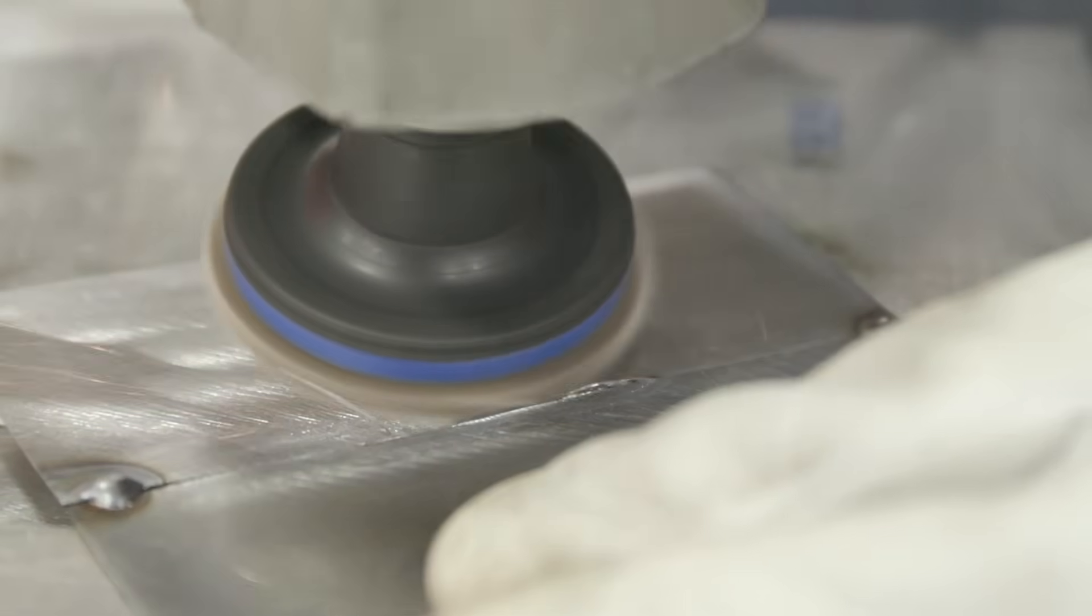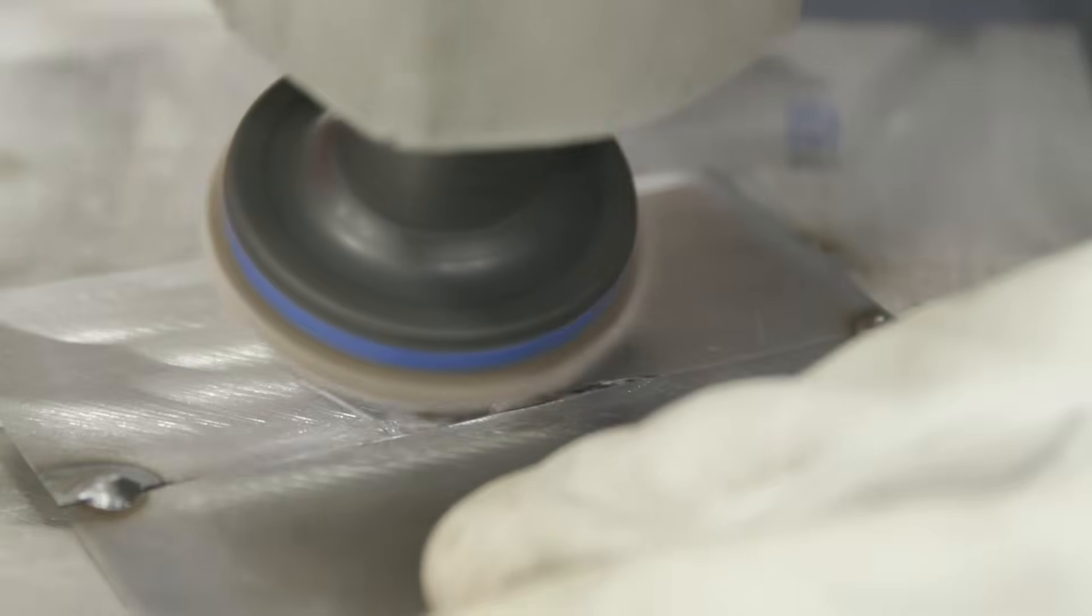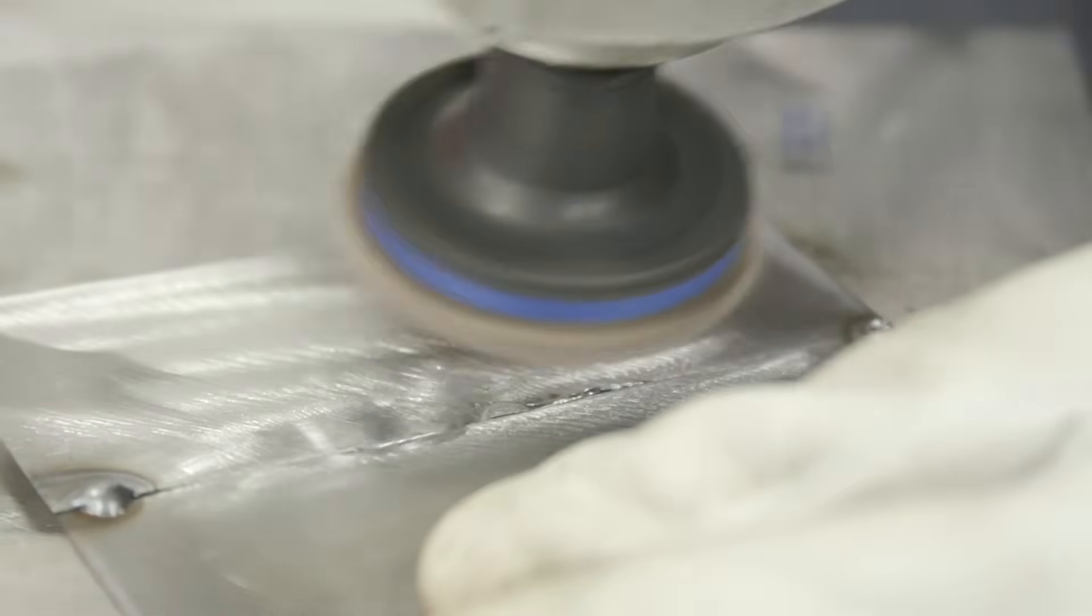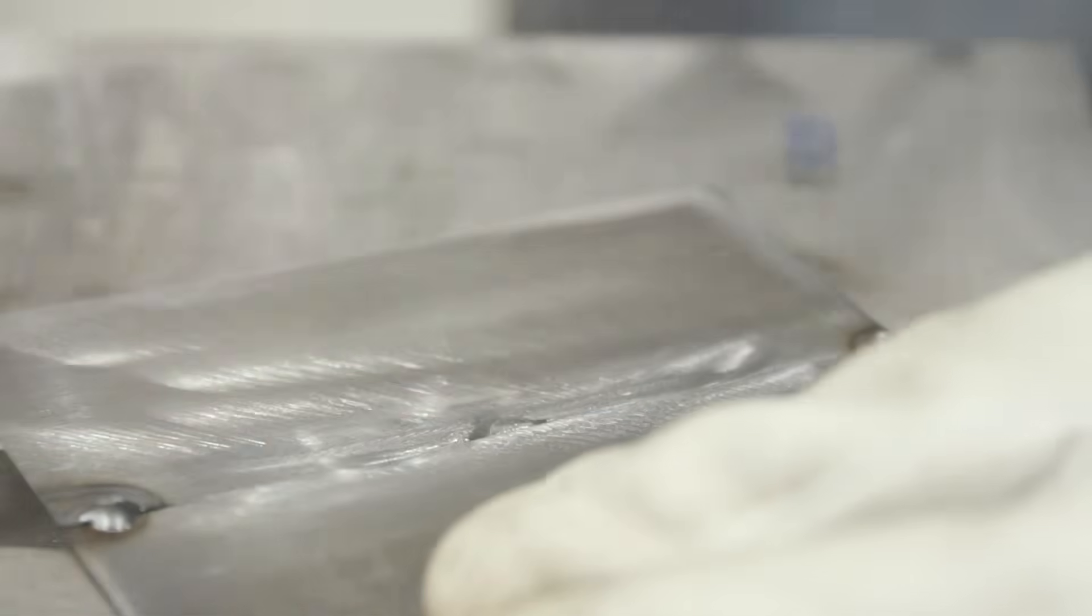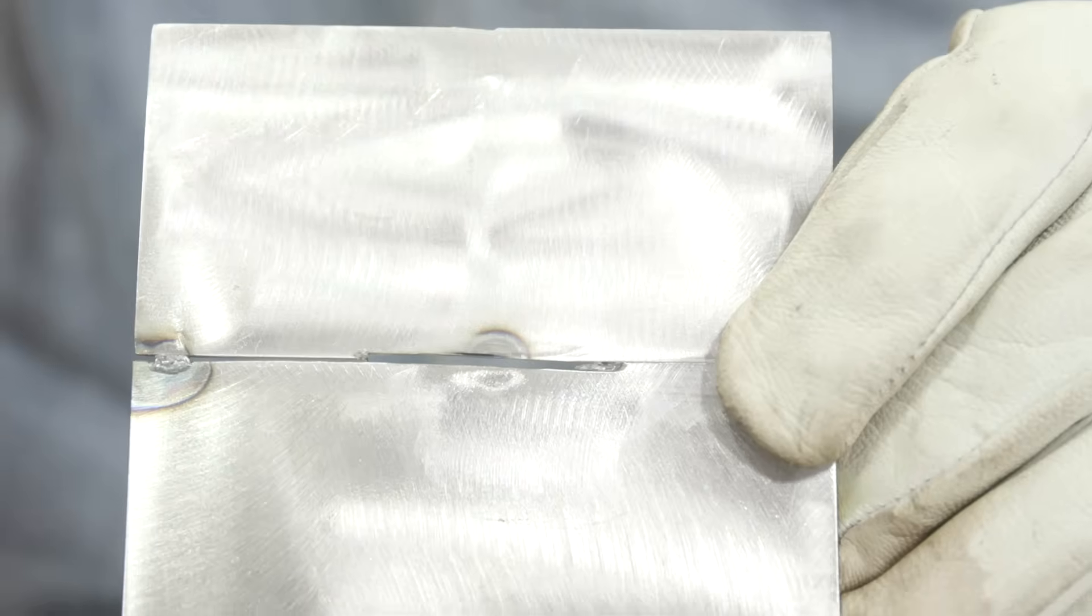Then you're just going to grab a flap disc or a scotch-brite pad and you're going to grind that flat, nice and flat, basically remove the whole tack weld. Then you're going to re-tack it and make sure it's completely flush.